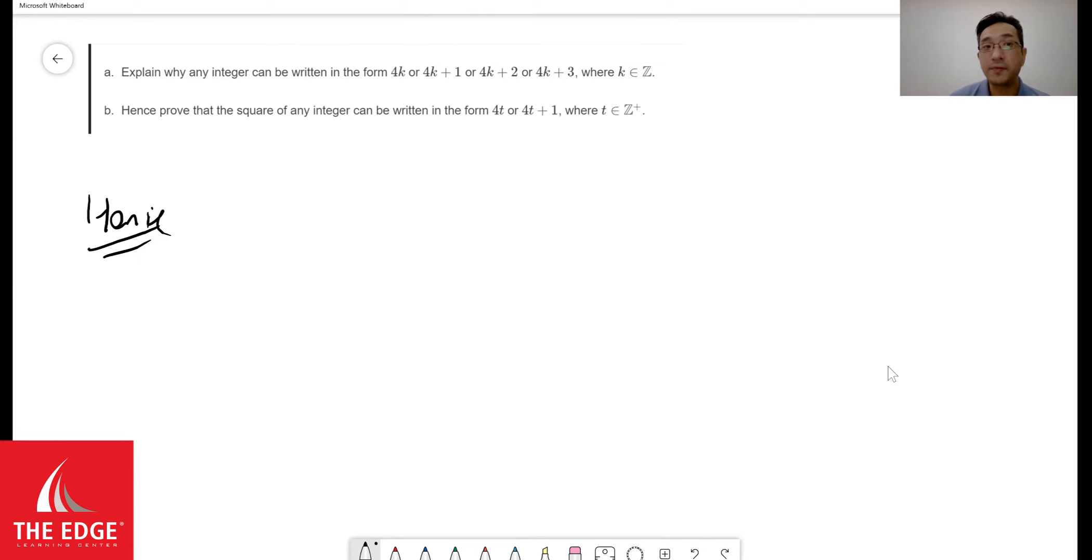So the previous part gave us that any integers can be written in the form of 4k, 4k plus 1, 4k plus 2, 4k plus 3. So I'm going to start with that. So the first thing I'm going to do is I'm going to assume scenario number one, that a number can be written as just 4k.